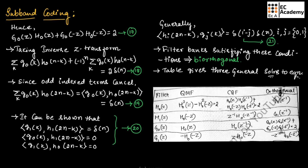Filter banks satisfying these conditions are known as bi-orthogonal. The table below gives the general solutions for h0(z), h1(z), g0(z), and g1(z). The second column gives the QMF (quadrature mirror filter) equations, the third column gives the CQF (conjugate quadrature filter) equations, and the fourth column gives the orthonormal equations used for fast Fourier transforms.